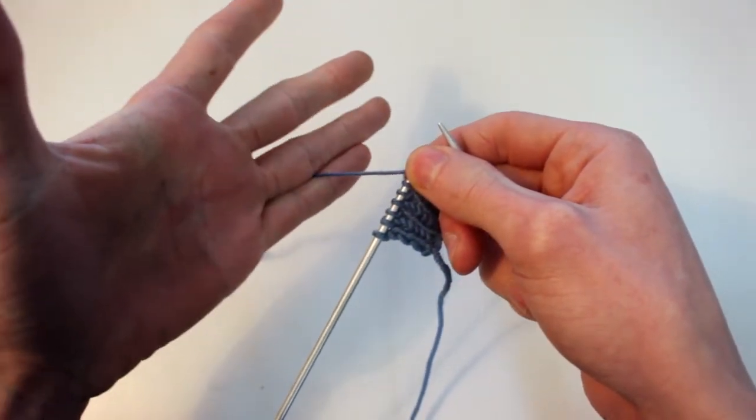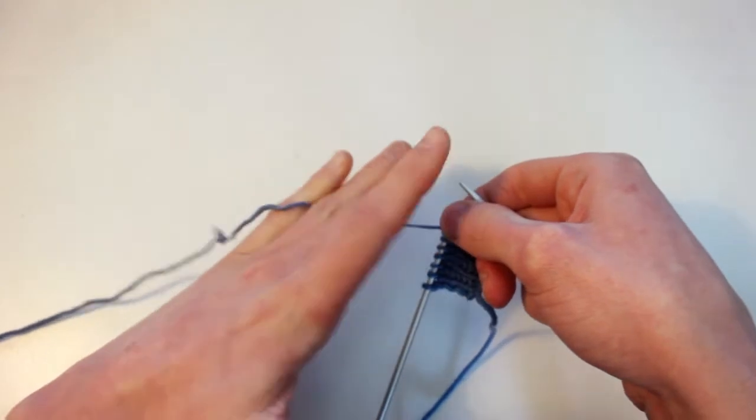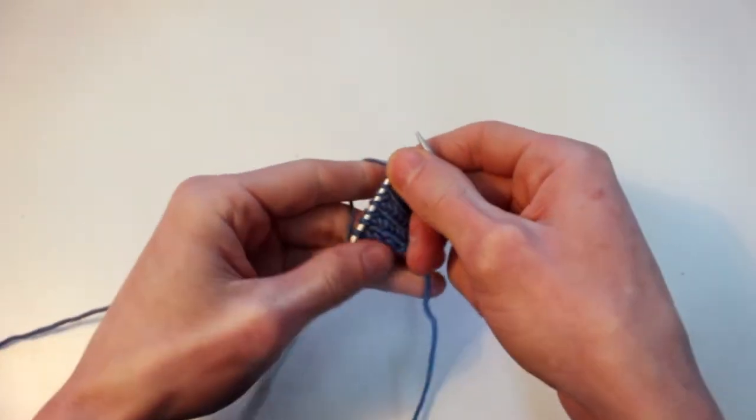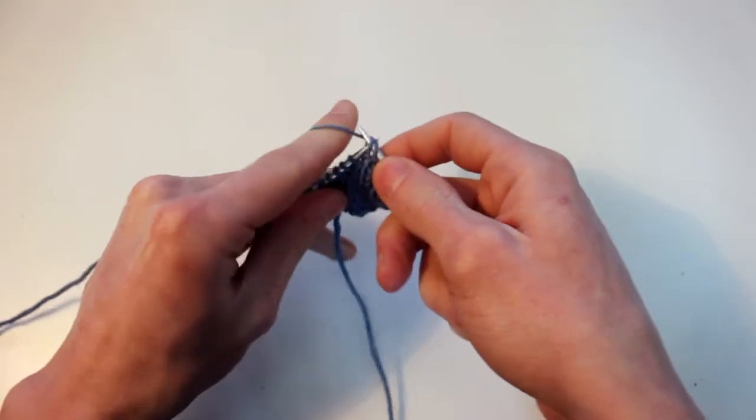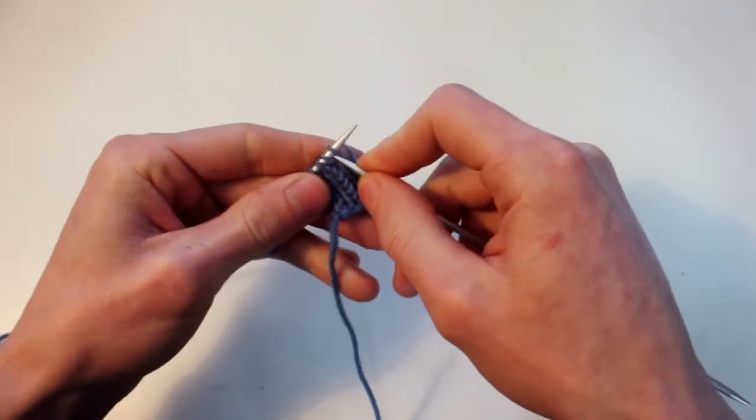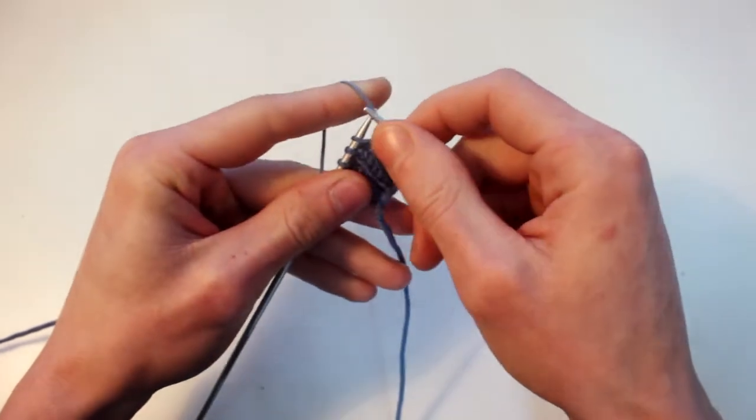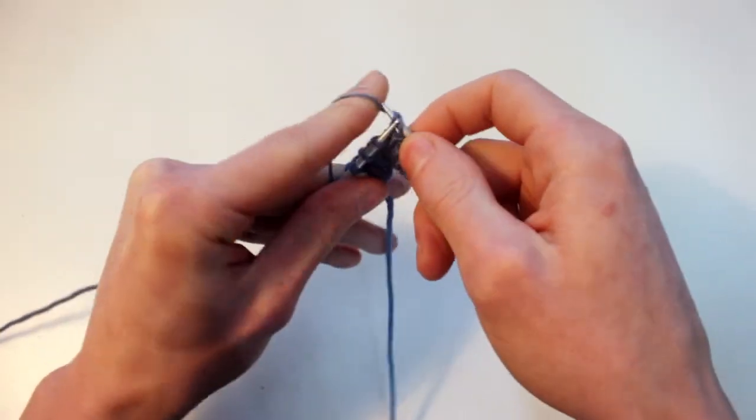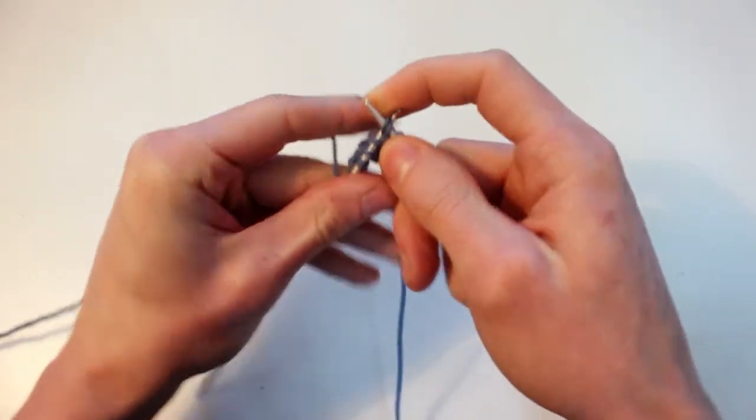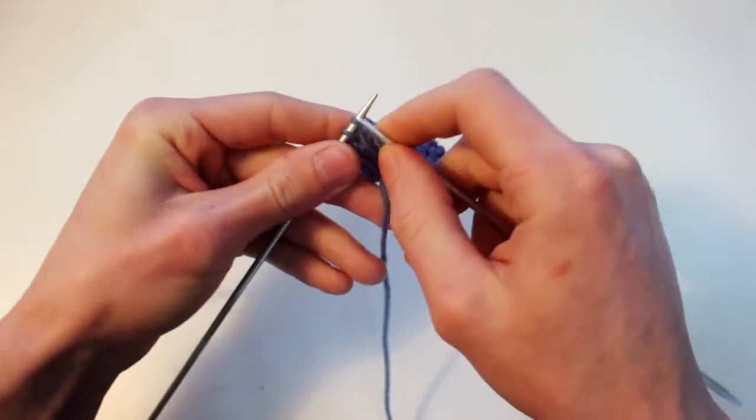So if I use my pinky and my ring finger like this and then drape it over my index, now it's tense so I can grasp the yarn very easily and bend it to my will. That's what we're trying to do here. We're trying to get the yarn to comply with our desires.